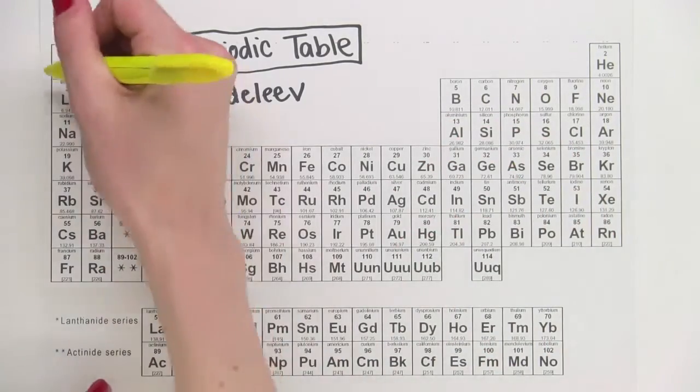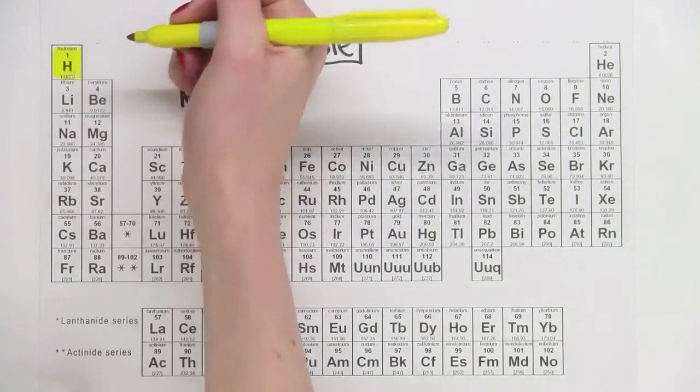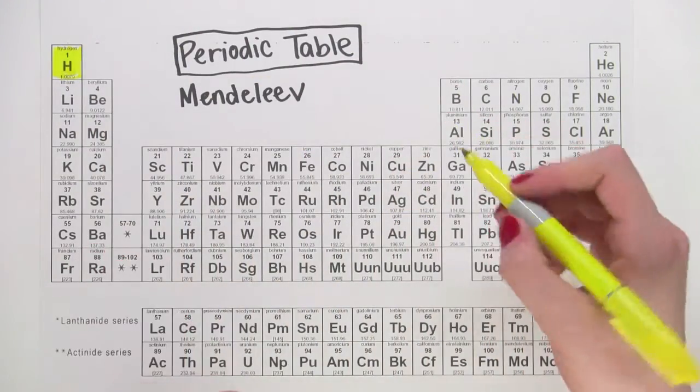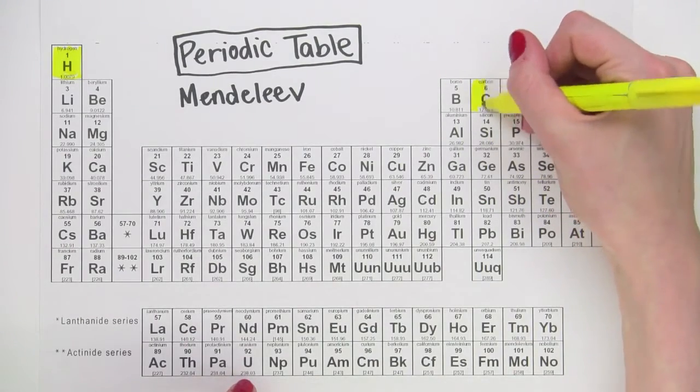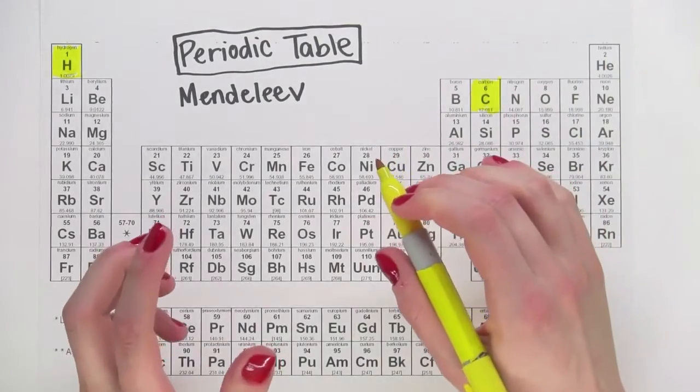Now hydrogen over here has one electron in its outer shell and needs just one more to fill it. Carbon has four electrons in its outer shell and needs four more, a total of eight electrons to fill it.